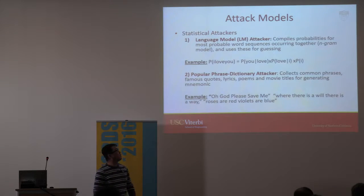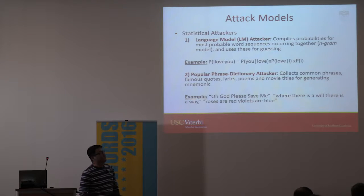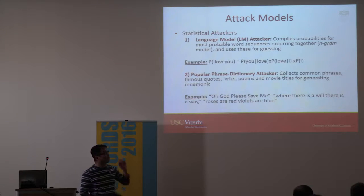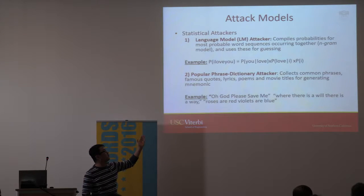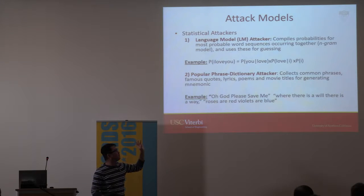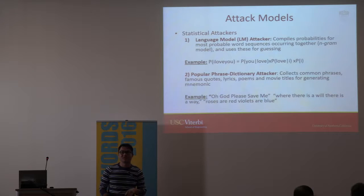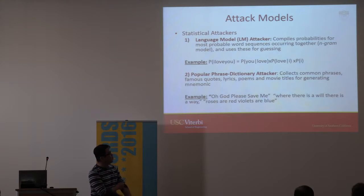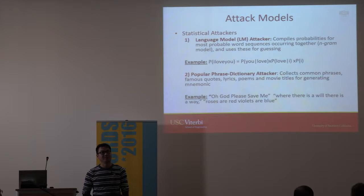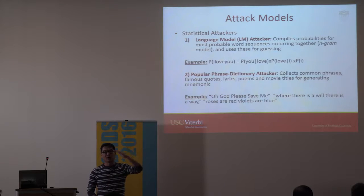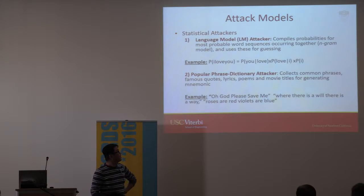We consider two types of attack models based on statistical guessing. The first attack is the language model attacker. In NLP, people can build a language model — for example, the probability of 'I love you' can be broken down into: probability of I, times probability of love given I, times probability of you given love. This is a bigram model. An attacker can also compute precisely the probability of each word and phrase occurring, then try the more probable phrases first, and so on.